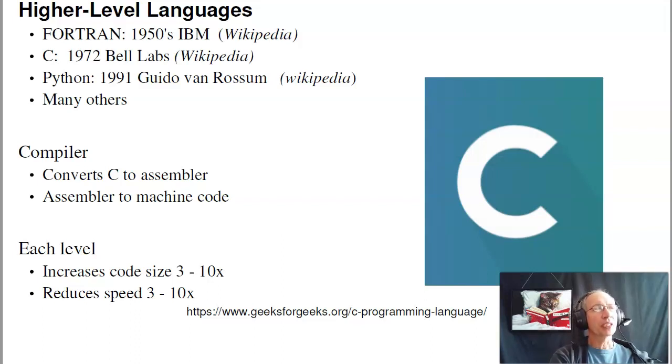But eventually it's got to get compiled into Assembler. Every time you go up a level, say from Assembler to C, from C to Ada, to Lisp, higher level languages, every time you go up in convenience, the code size typically increases 3 to 10 times. Which means the code runs 3 to 10 times slower. But in return, you wind up with code which is understandable and maintainable.